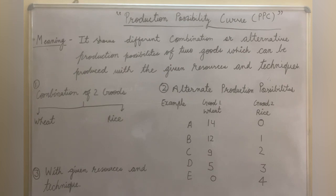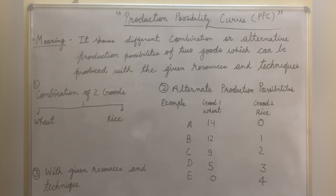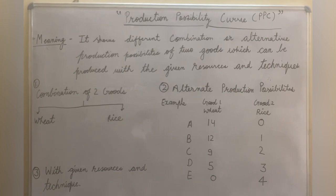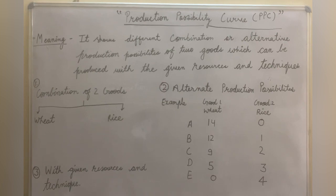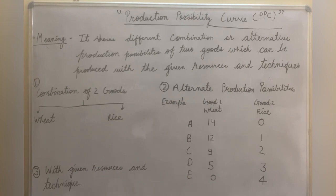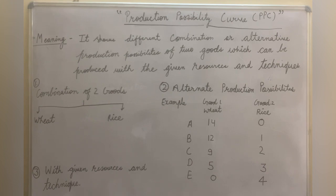There are alternative production possibilities from point A to E. At point A, the producer takes 14 kg of wheat against 0 kg of rice, meaning his land is more capable of growing wheat. At point B, wheat decreases to 12 kg. As he moves from A to B, he is sacrificing wheat quantity in order to increase rice production from 0 to 1 kg.